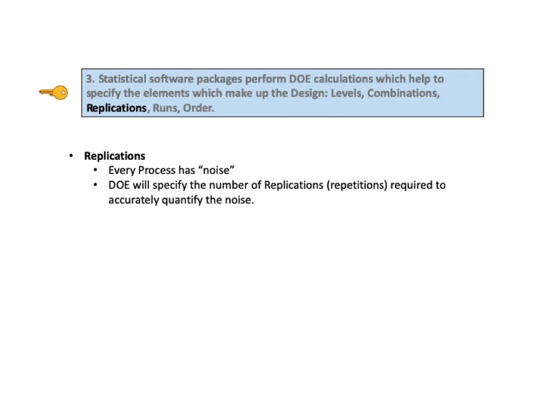Every process has some amount of random internal variation, often called noise. If we repeat — that is, replicate — a given combination three times, we are likely to get three somewhat different values of the response due to that noise. DOE will specify a number of replications, that is repetitions, which will enable this noise to be accurately quantified. If we can quantify the noise, then we can separate it from the variation which is caused by varying the values of the factors.